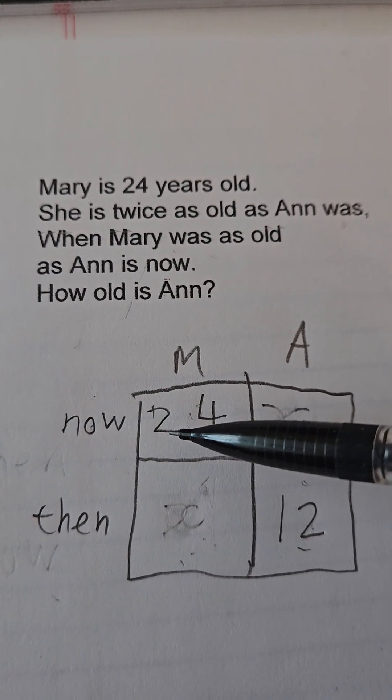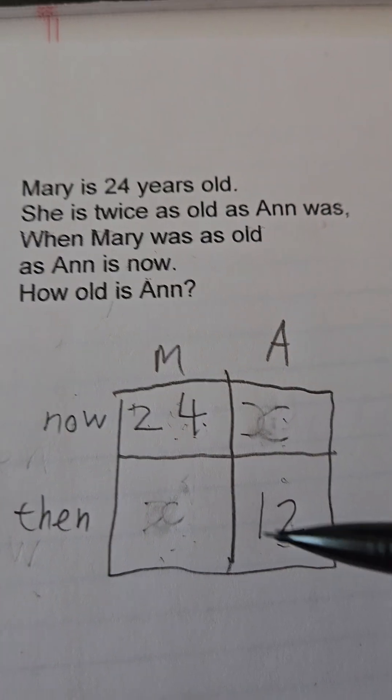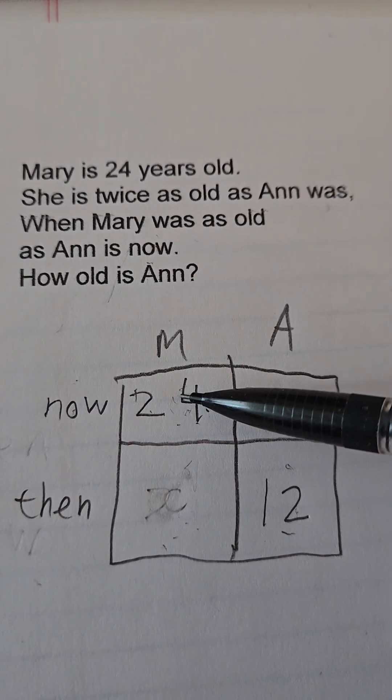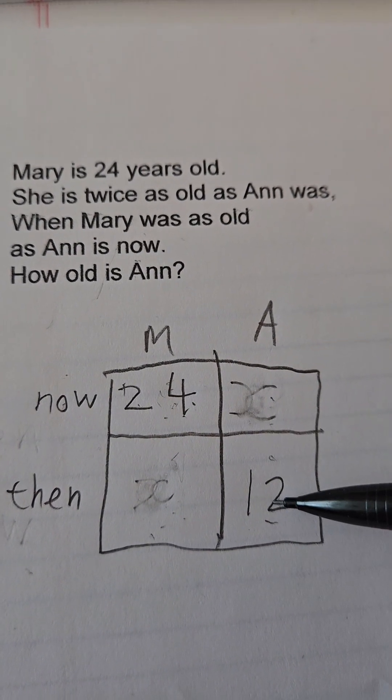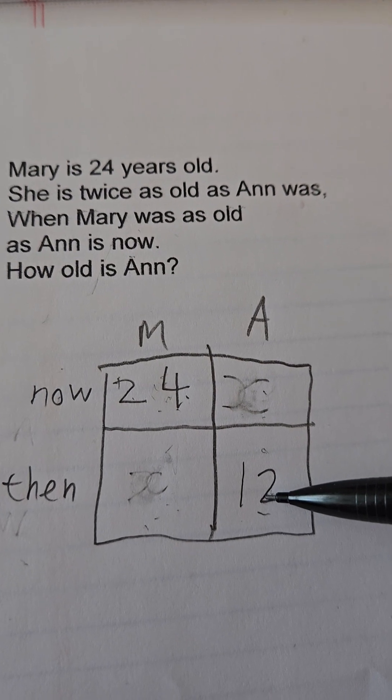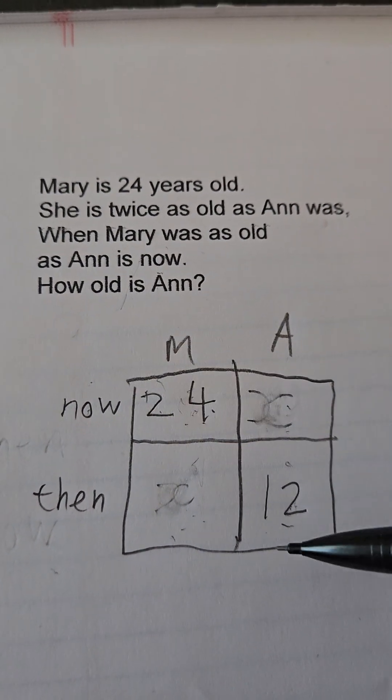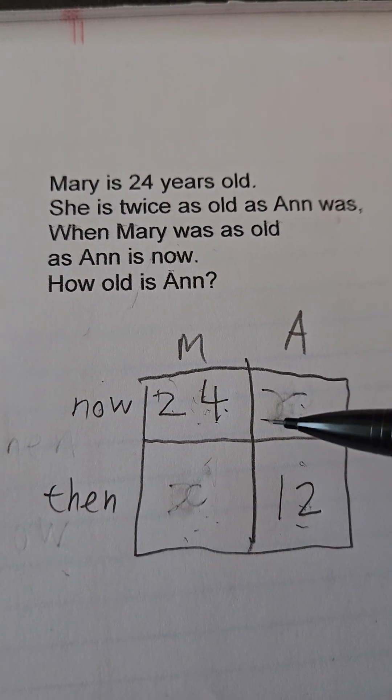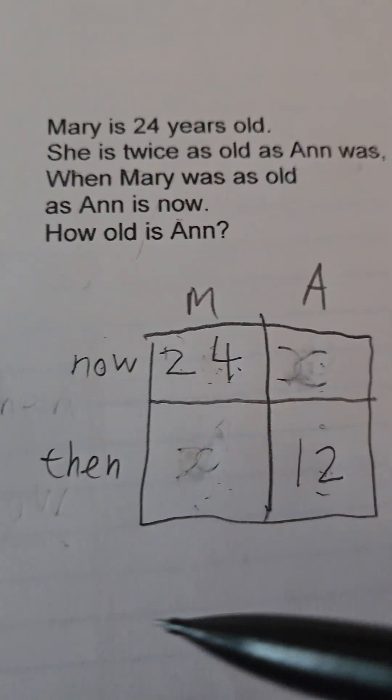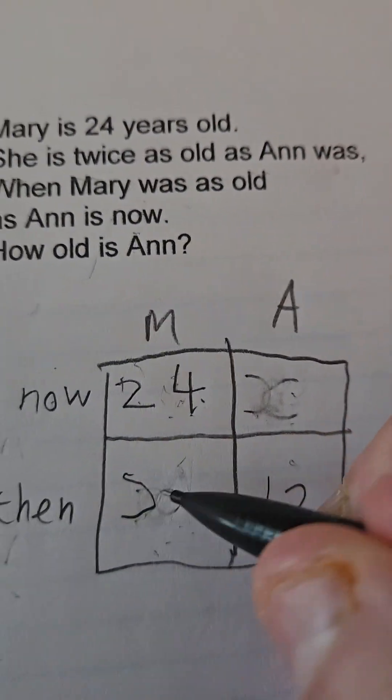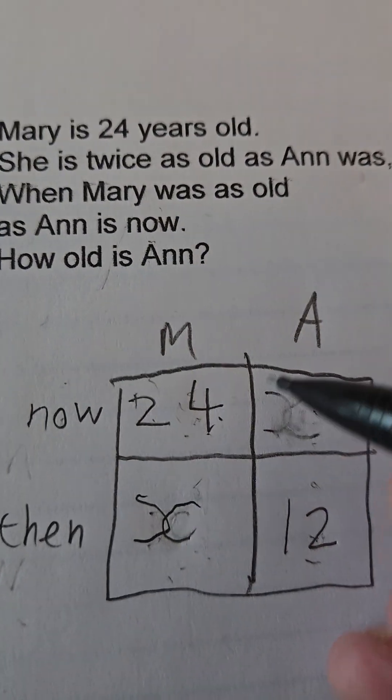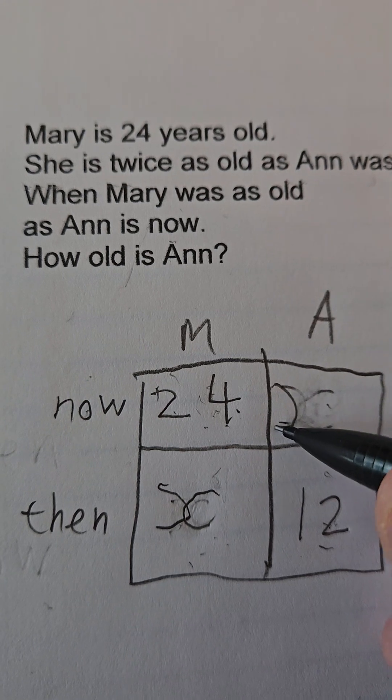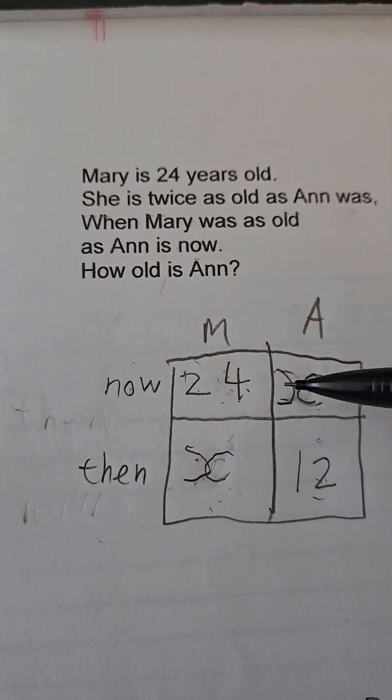Now it says she's twice as old as Anne was. Say Mary's 24 now, Anne was 12 at another time period. She's twice as old as Anne was when Mary was as old as Anne is now. Anne is now, perfect. So Mary's age then is Anne's age now. It's the same age.